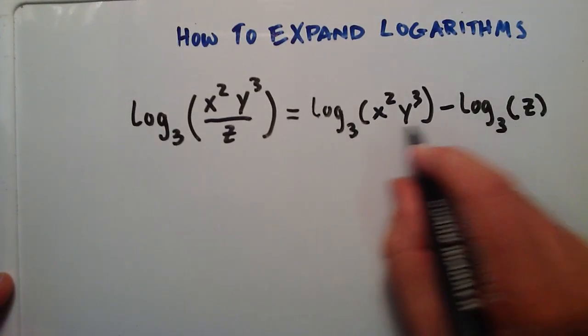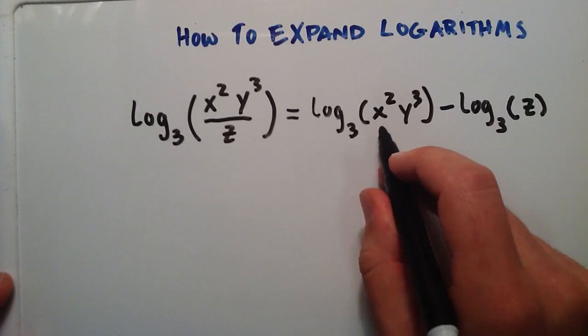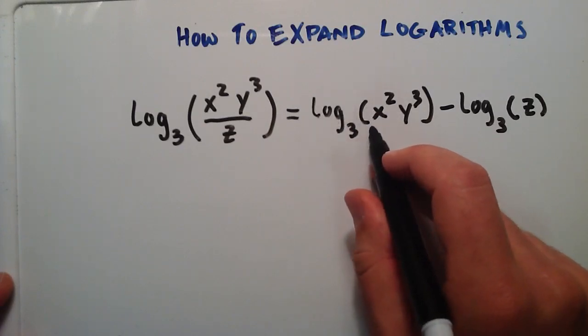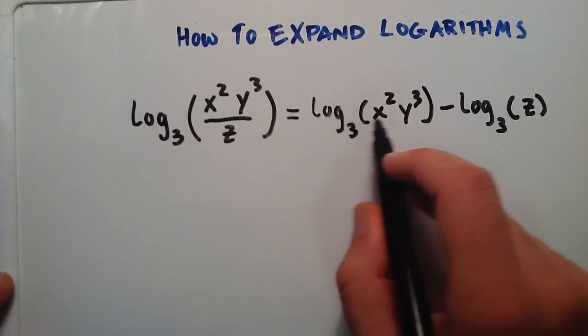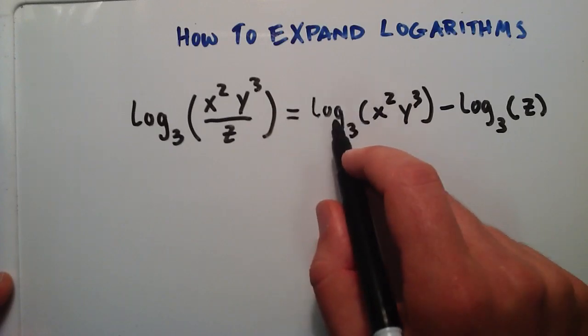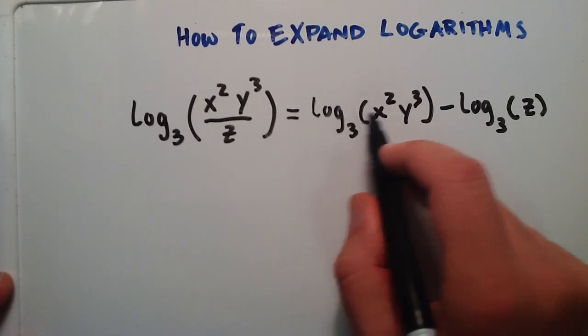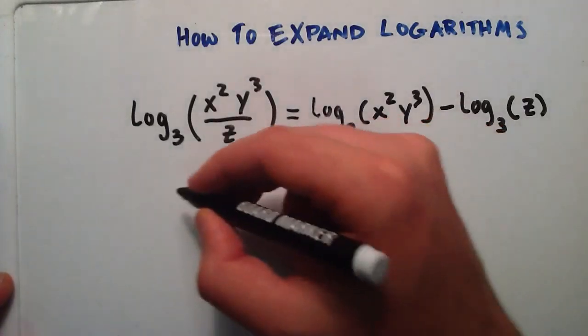So we've expanded this a little bit, but we can use some of the other properties to expand this a little more. So another property that I told you about was when you have a logarithm of a product, two things multiplied by one another, then that can be split up into the logarithm of the first plus the logarithm of the second.